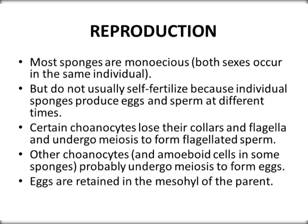Most sponges are monoecious, meaning both male and female sexes are present in the same individual. However, they are not able to self-fertilize because the sperm and eggs are produced at different times, so the sperm of one individual fertilizes the eggs of another. Certain choanocytes lose their collars and flagella and undergo meiosis to form flagellated sperm. Other choanocytes may also undergo meiosis to form eggs, which are retained in the mesohyl of the parent.